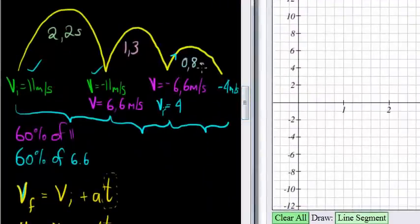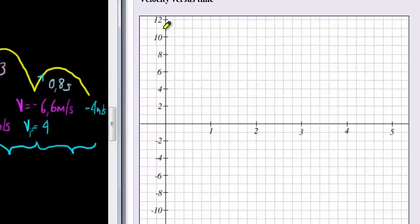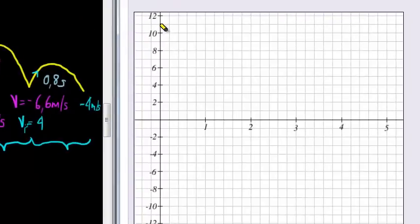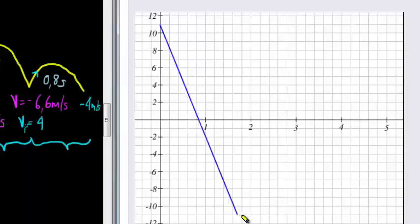So this is 0.8 seconds. So to draw the first one, for 2.2 seconds, I must go from 11 meters per second to negative 11. So there's 11. Until I get to negative 11. There's negative 11. And it must take me 2.2 seconds. There's 1.2. There's 2. There's 2.2 seconds. And there I go.